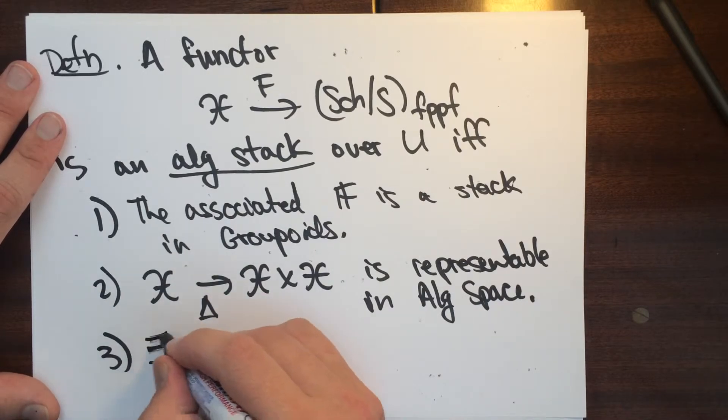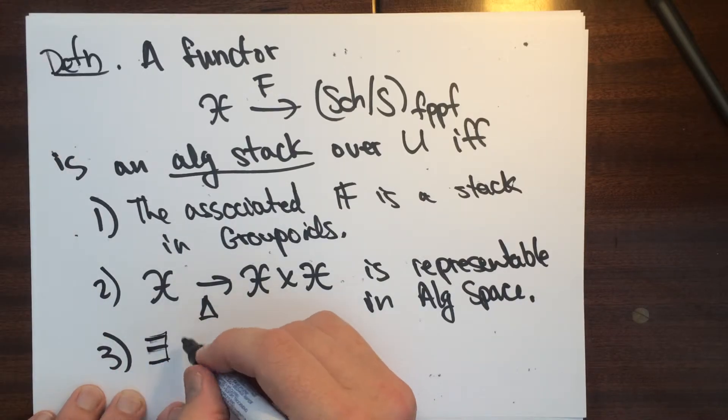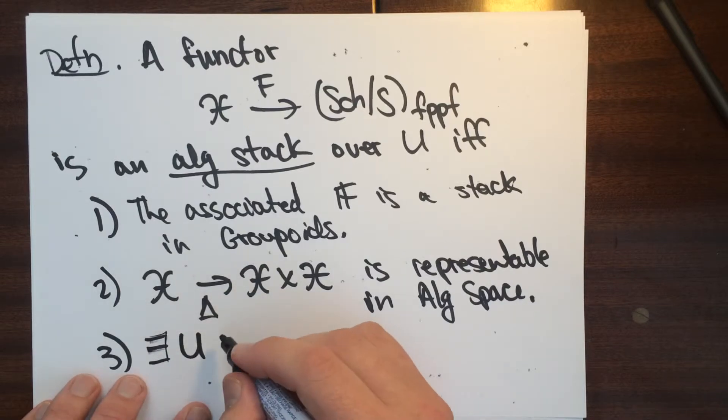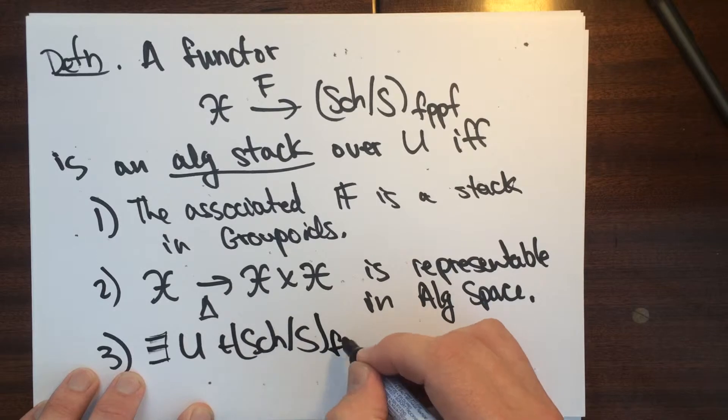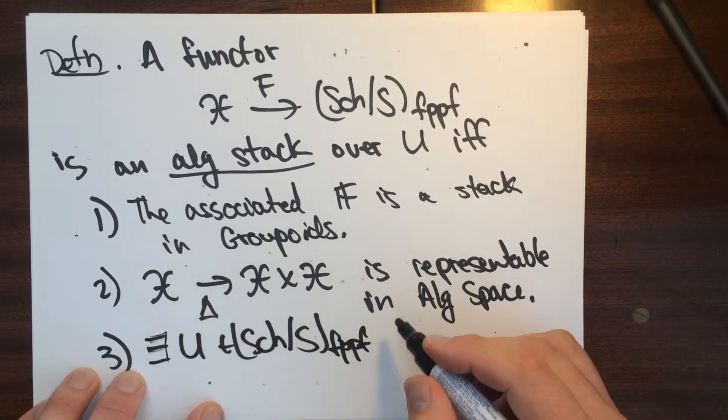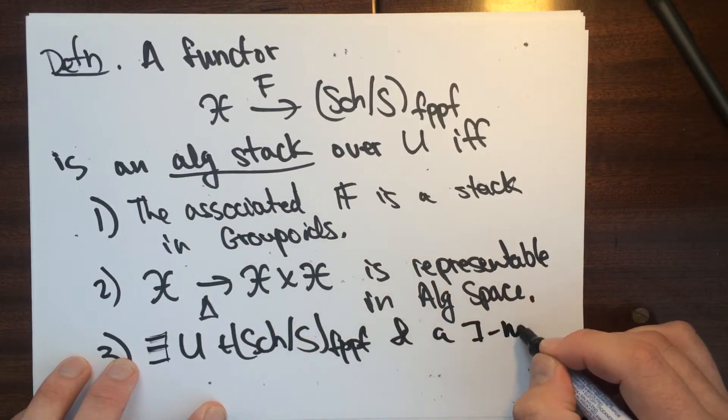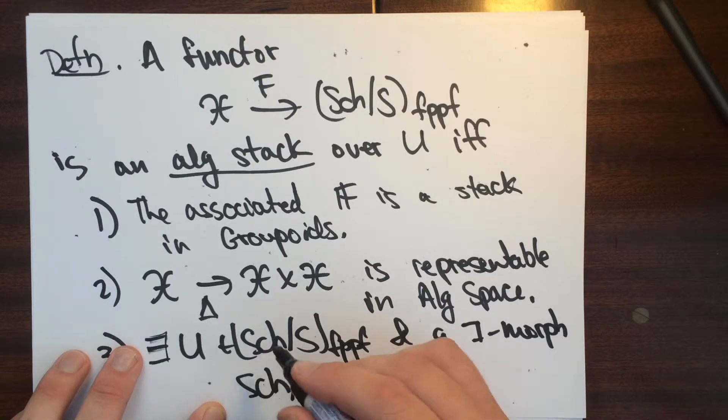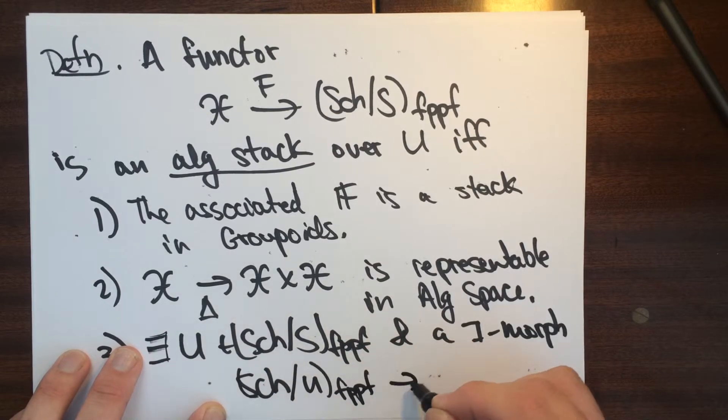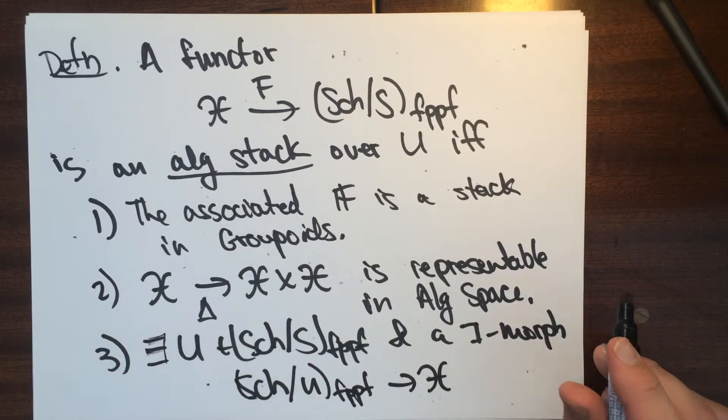And so the other thing is that there exists some U. Okay, so there's this covering condition that's an fppf object here and a one morphism from schemes over U to X which is smooth.